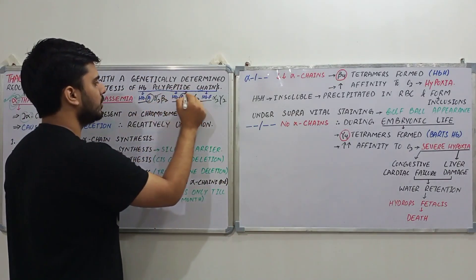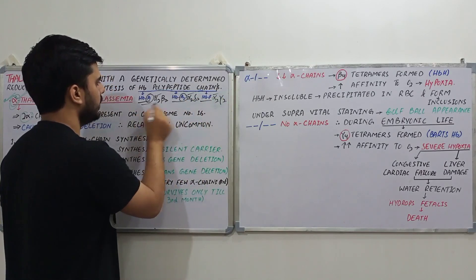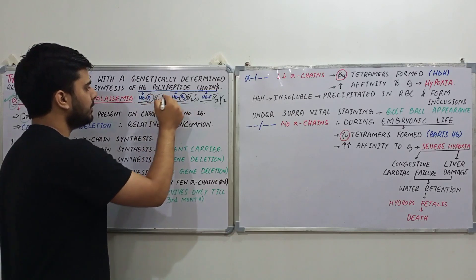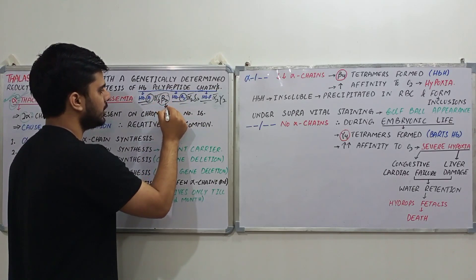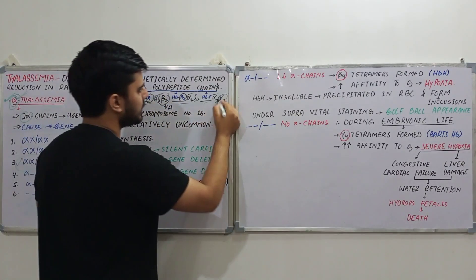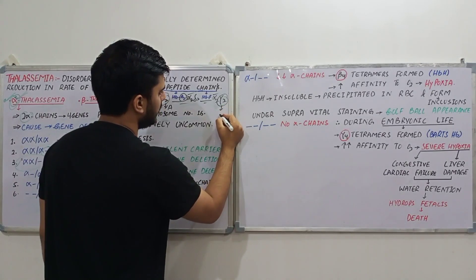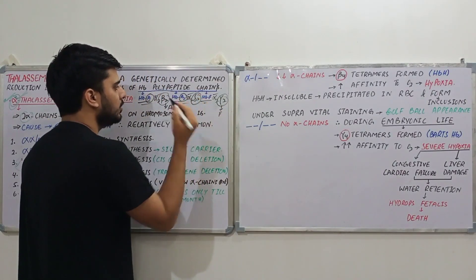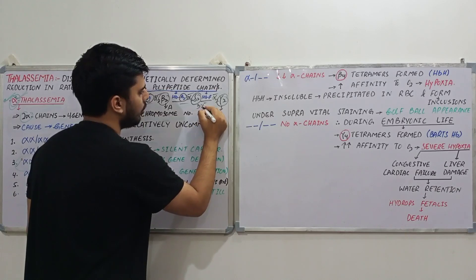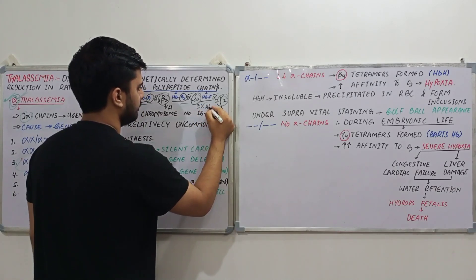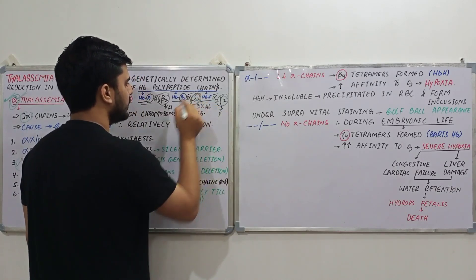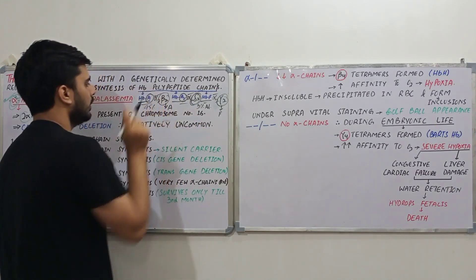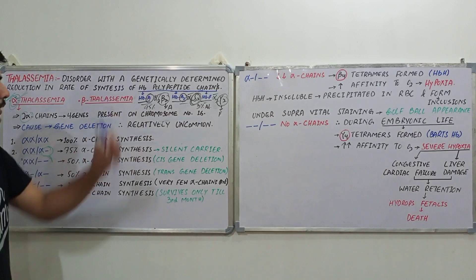We conclude that alpha chains are present in all types of hemoglobin, whether adult or fetal. Beta chains are present only in the adult stage. Gamma chains are present only in fetal life. Delta chains constitute only 3% of adult hemoglobin, so only 3% of adult hemoglobin is the HbA2 form, while 97% is HbA.